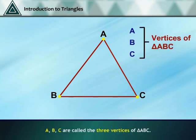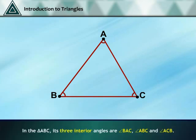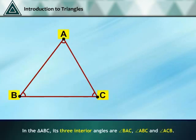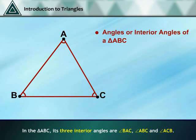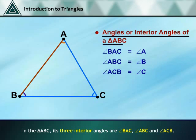ABC are called the three vertices of triangle ABC. Every triangle has three angles. In triangle ABC, its three interior angles are Angle BAC, Angle ABC and Angle ACB. Angle BAC can also be written as Angle A, Angle ABC as Angle B, and Angle ACB as Angle C. All these represent the interior angles of triangle ABC.